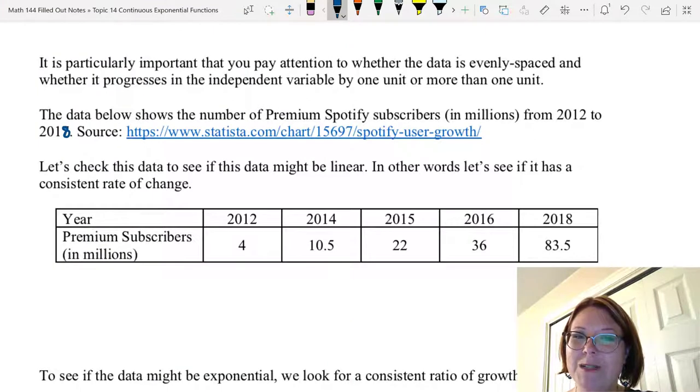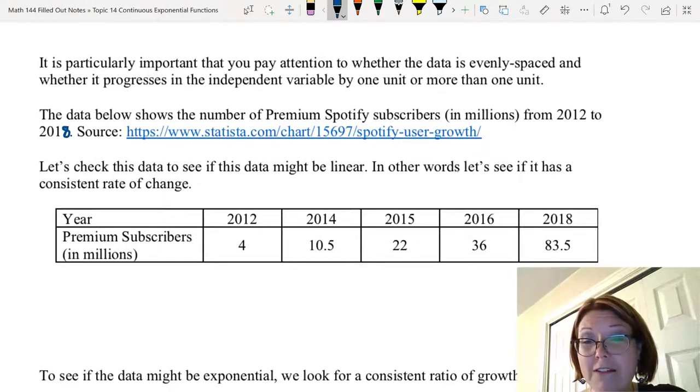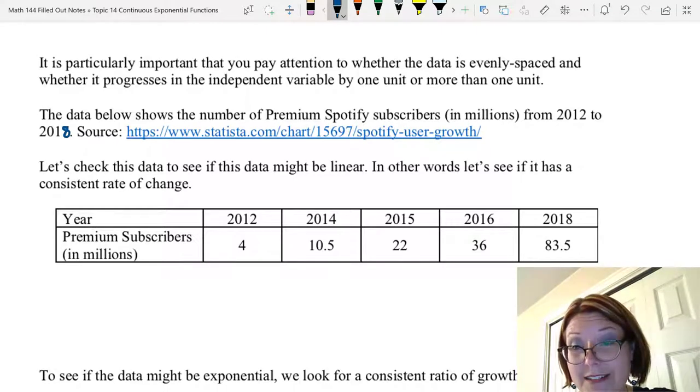Now, I've warned you a couple times that it's particularly important to pay attention to whether the data is evenly spaced and whether it progresses in the independent variable by one unit or more than one unit. We're going to take a look at some data that shows us the number of premium Spotify subscribers in millions from 2012 to 2018.